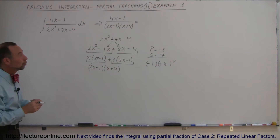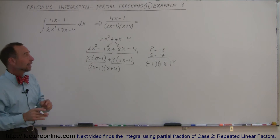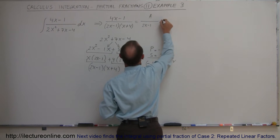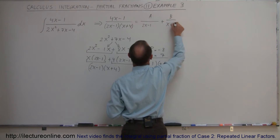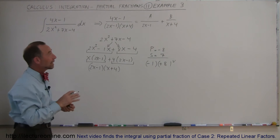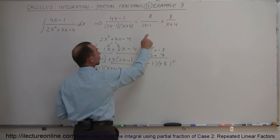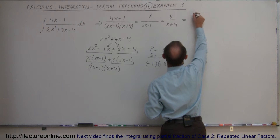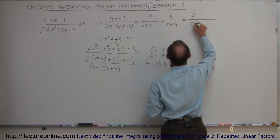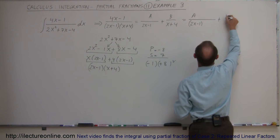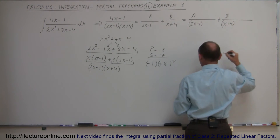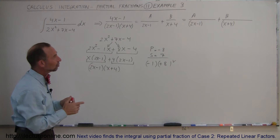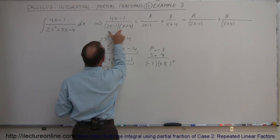Since the denominator is simply the product of two linear factors, I can write this as A/(2x - 1) + B/(x + 4). Now all I have to do is figure out what A and B are equal to. I'm going to multiply both the top and bottom by a factor to make the denominator look like (2x - 1)(x + 4). I use different colors so you can see what I'm doing.